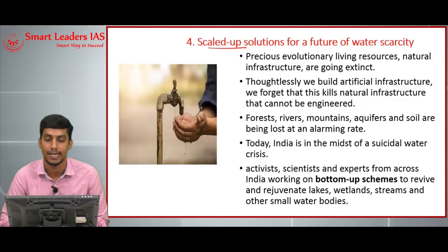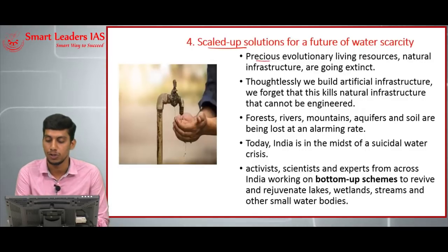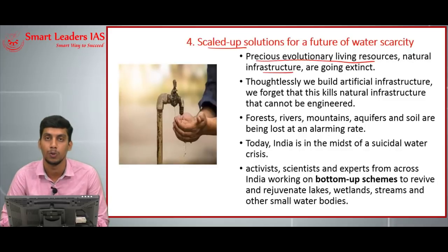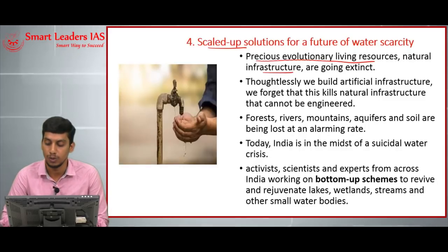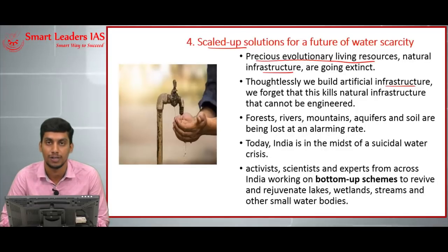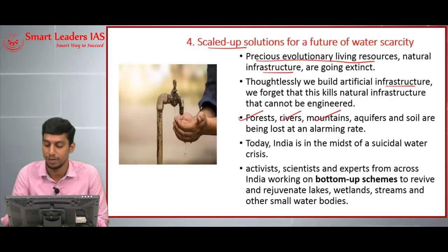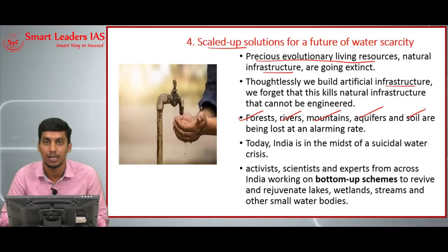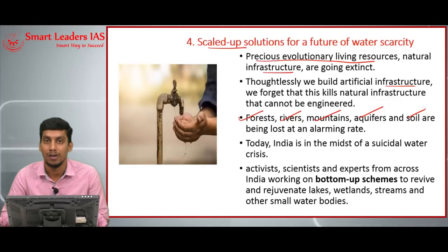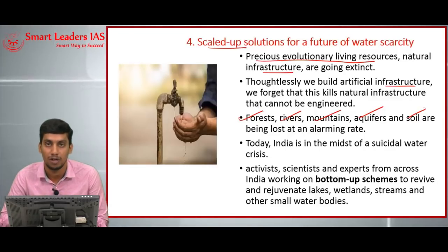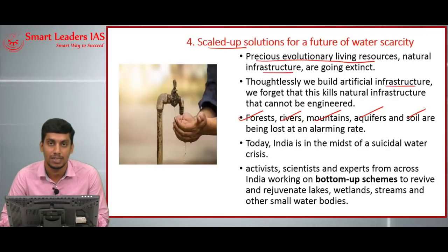Today's fourth topic is scaled-up solutions for future water scarcity. Precious evolutionary living sources and natural infrastructure are going extinct. We have two types of infrastructure: artificial infrastructure and natural infrastructure. Natural infrastructure includes forests, rivers, mountains, aquifers, and soils. Artificial infrastructure includes dams, roads, and ports that we build to make our lives sophisticated. Building artificial infrastructure is not wrong in itself — but at what cost?